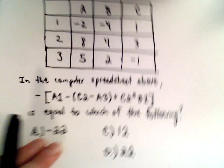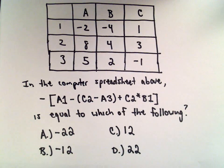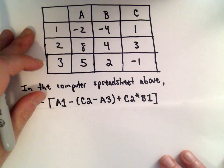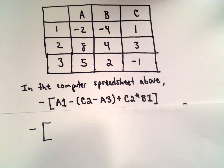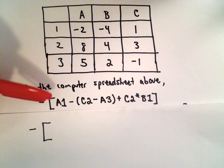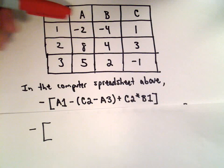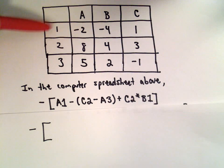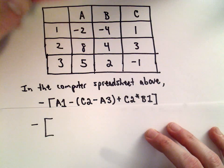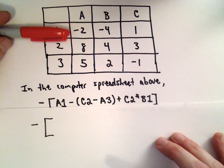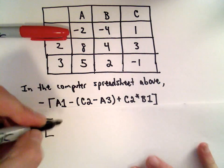Alright, so I'm just going to start filling in things here. We've got negative, there's my brackets. I need to find the value for the entry A1. I just find the column A and then row 1 where those meet. So A1 is going to be the value negative 2. That's going to give us negative 2.